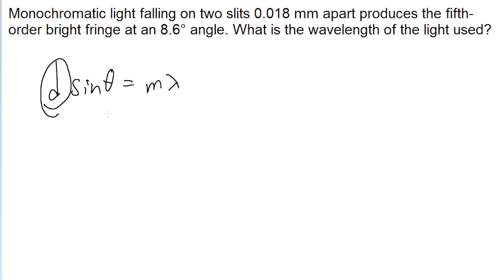where D is the distance between the two slits, theta is the angle that the specific fringe we're looking at is at, M is the order of the fringe, and lambda is the wavelength of the light.